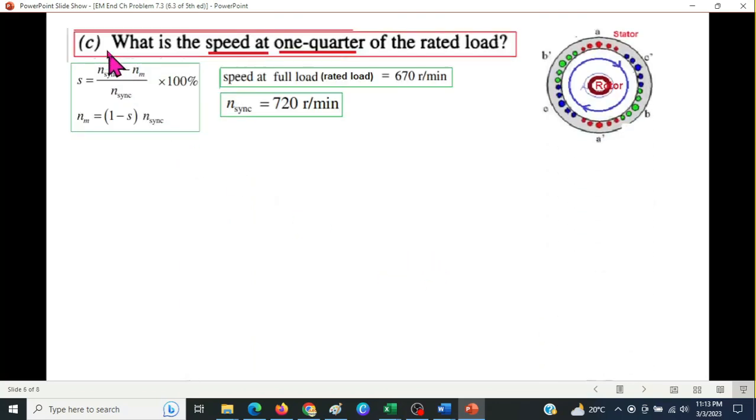And now the third part. What is the speed at one quarter of the rated load? Now this is slightly tricky, bear with me. From this formula we can get the formula for speed of the rotor. This one. And here we need the value of slip. Now this will be a new slip at one quarter of the load.